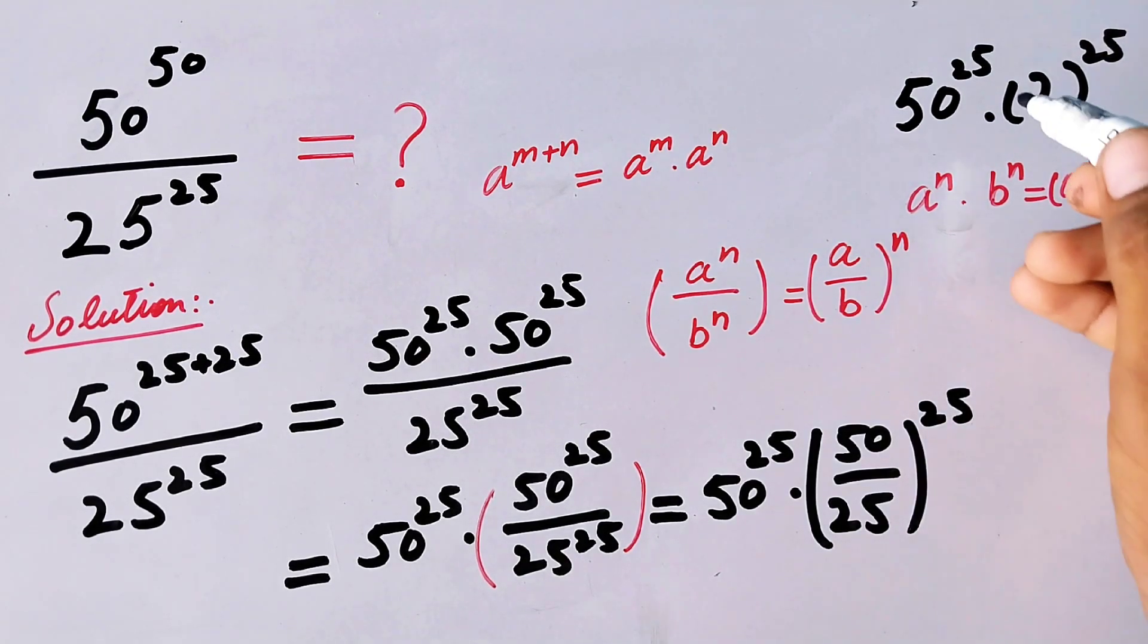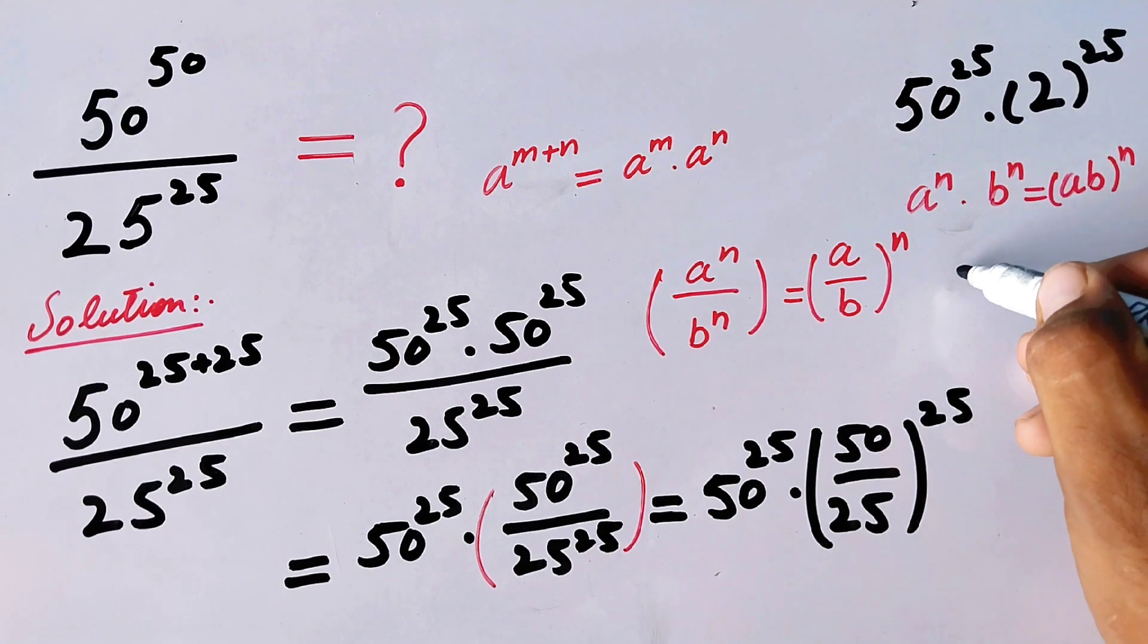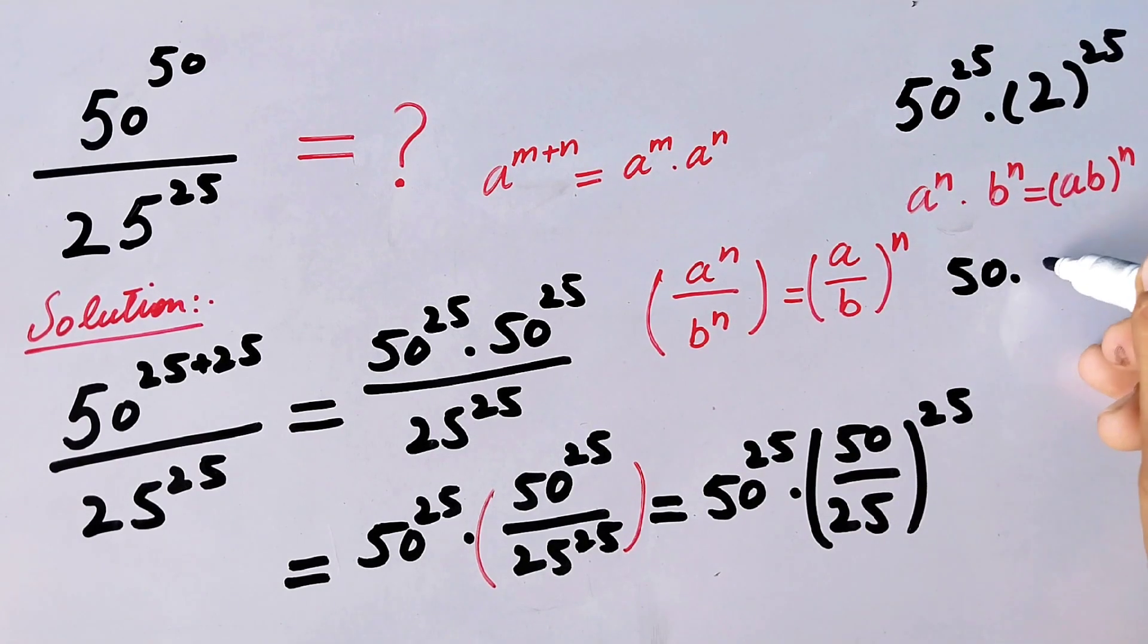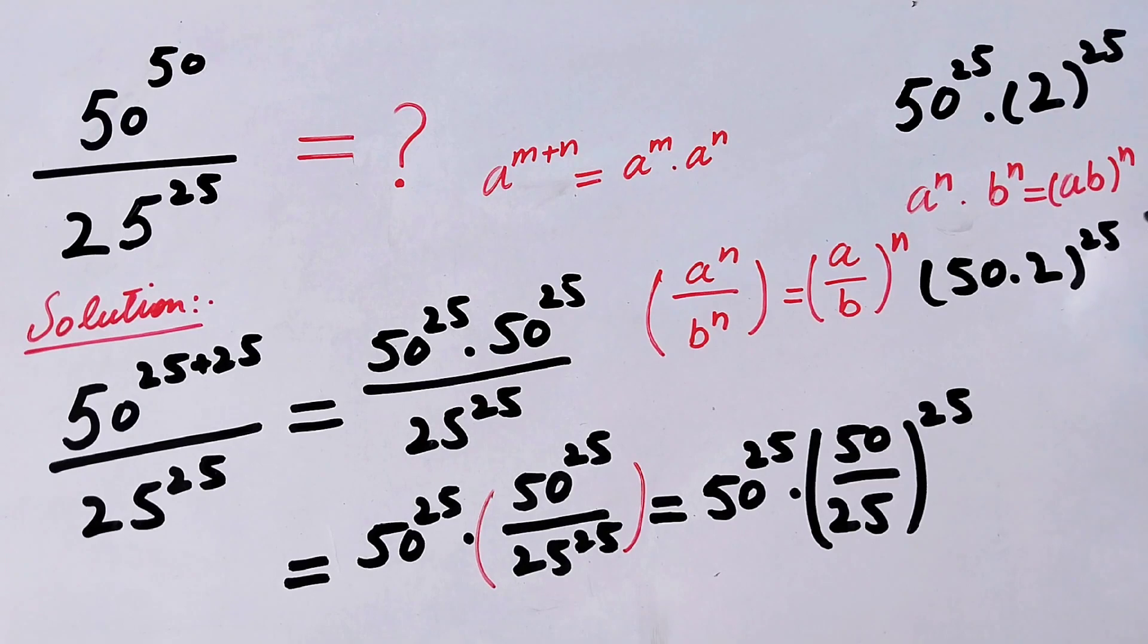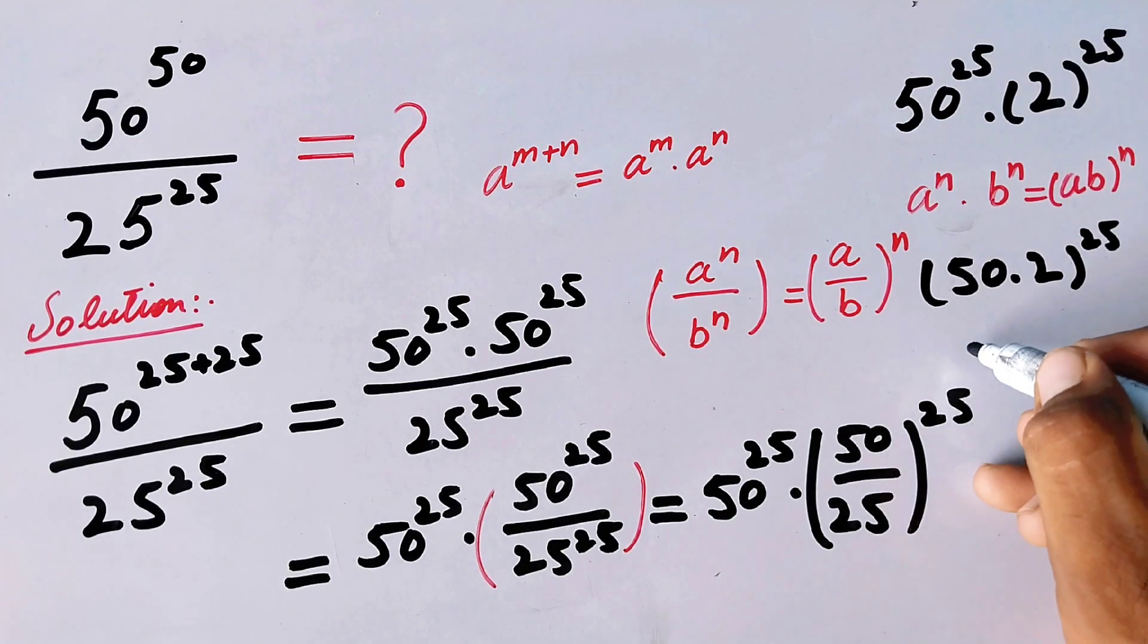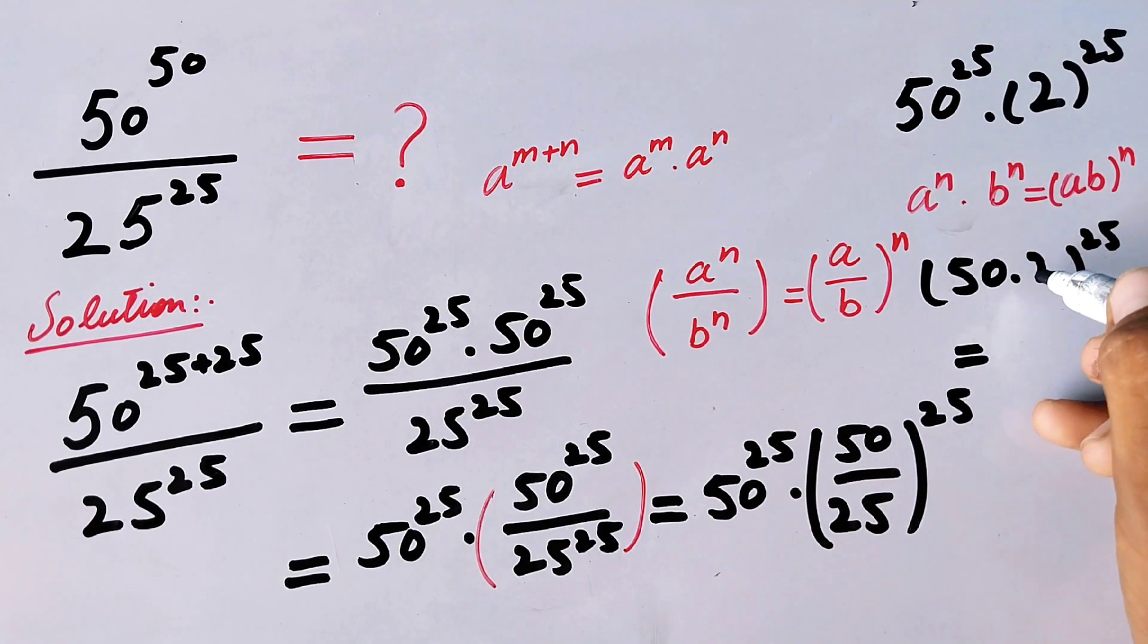This will become 50 multiplied by 2, which equals 100^25.